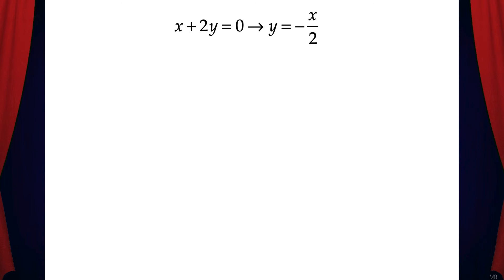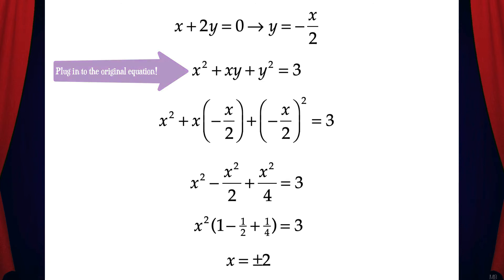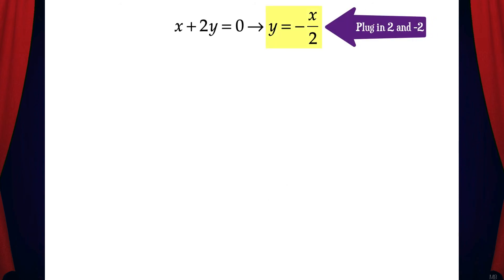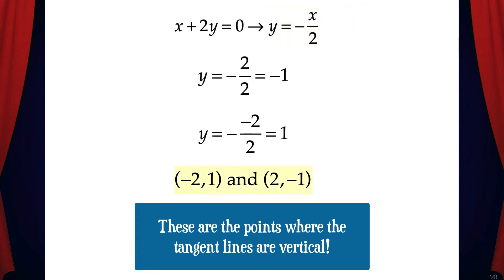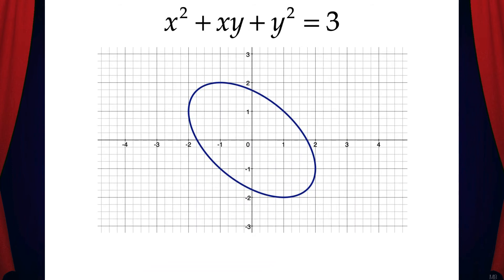When we solve we get y equals negative x over 2. Now let's plug this back into the original equation and solve for x. When we do that we get x squared plus x times negative x over 2 plus negative x over 2 squared equals 3. When we do the algebra and solve for x we get x equals plus or minus 2. Now we can plug plus or minus 2 back into our y equation, which was y equals negative x over 2, and we get negative 1 and 1. That means the points where the tangent lines are vertical are negative 2, 1 and 2, negative 1.